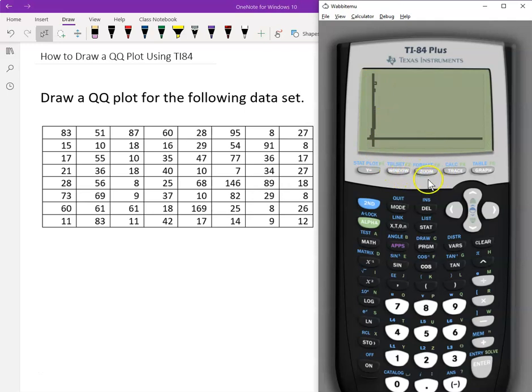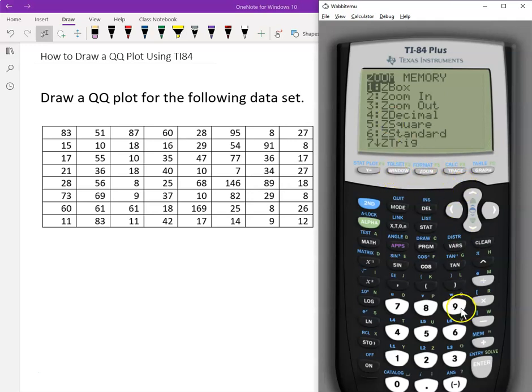So click Zoom, go down to number nine, or you type a nine. Go down to number nine, Zoom Stat. It will automatically set up your window for you.